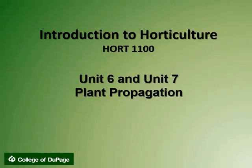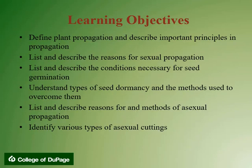Welcome back to Introduction to Horticulture, HORT 1100. Today's lecture covers Unit 6 and Unit 7 on plant propagation. In today's lecture, we are going to define plant propagation and describe important principles in propagation, list and describe the reasons for sexual propagation, list and describe the conditions necessary for seed germination, understand types of seed dormancy and methods used to overcome them, list and describe reasons for and methods of asexual propagation, and identify various types of asexual cuttings.